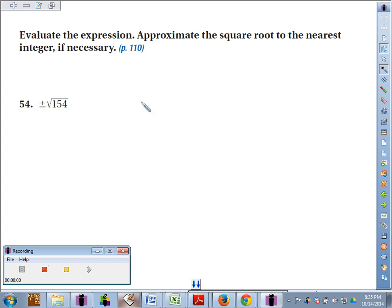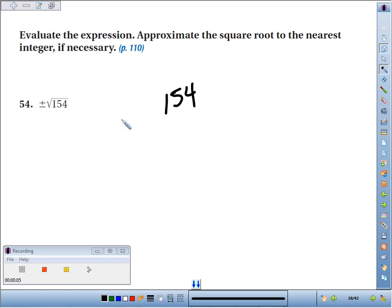54, we're going to estimate the square root to the nearest integer. Now, 154 is not a perfect square, but we have perfect squares around it, 144 and 169.